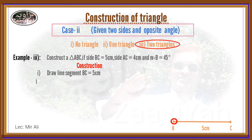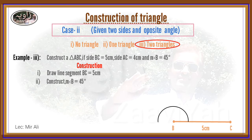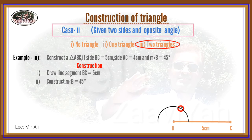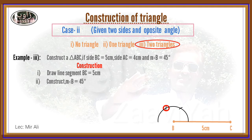At point B, construct a 45 degree angle. The radius will change and the arc will be drawn at the required angle position.